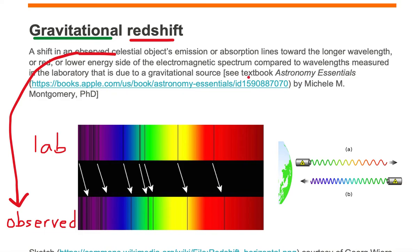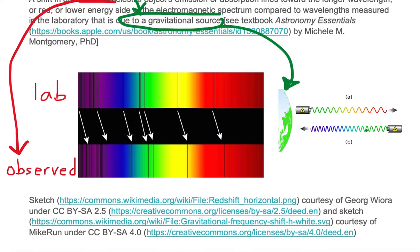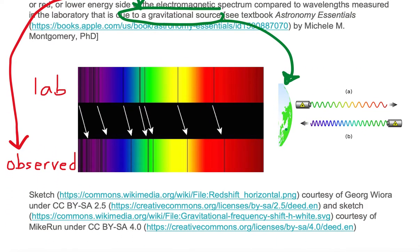Now let's look at the second part, the source. The source of the shift is a gravitational source. Let's take a look at an example. Here we have planet Earth and we have a source of light that's emitting green waves away from planet Earth.